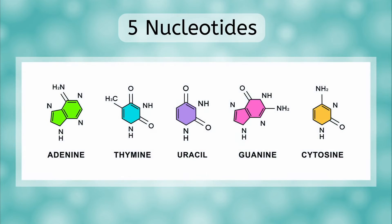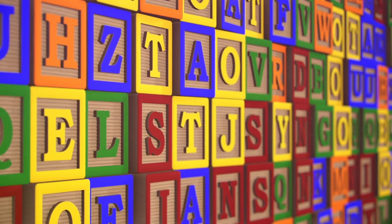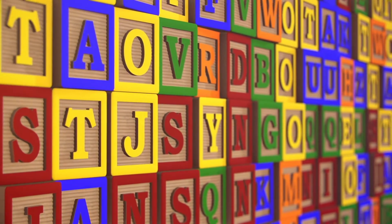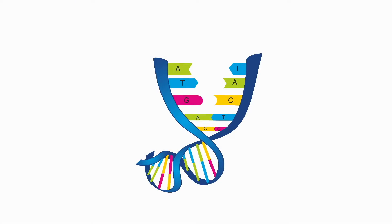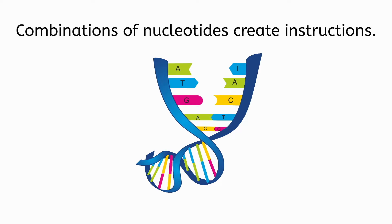There are five different types of nucleotides — adenine, thymine, uracil, cytosine, and guanine. Those names are a mouthful! Usually we just refer to them by their first letters — A, T, U, G, and C. And speaking of letters, it is helpful to think of these five bases as an alphabet. It's the alphabet that DNA uses to make the equivalent of words. By combining these letters in different ways, your DNA can have a seemingly infinite array of different words or instructions.